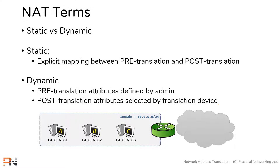Here's the topology we'll be using. In our topology, we'll be using a router as our translation device, but do keep in mind many different devices can do NAT. Firewalls can do NAT, load balancers can do NAT, even servers can do NAT if you configure them to do so. Our topology is going to have three hosts with private addresses on the inside, and then this cloud over here will represent the internet.